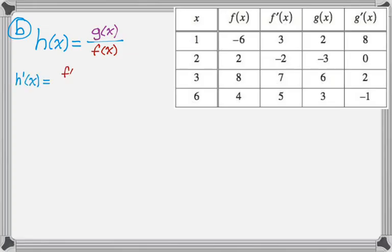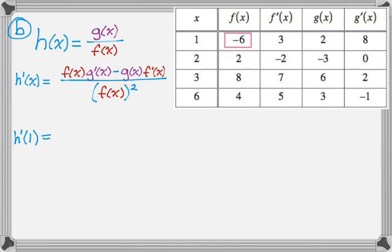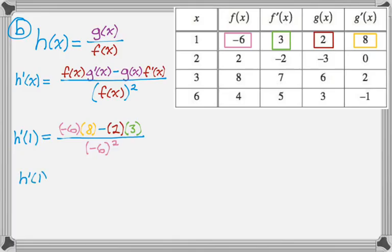So it's going to be bottom, derivative of the top, minus top, derivative of the bottom, and then all over the bottom squared. All right, and now we're going to pick a lot of things out of this table here. h prime of 1 is f of 1, which is negative 6, g prime of 1, which is 8, minus g of 1, which is 2. That row's getting a lot of use here. f prime of 1, which is 3, and then all over negative 6 squared. And if we simplify that, we get negative 54 over 36, which is negative 3 halves. And that's the answer to that question.